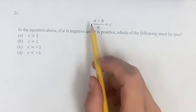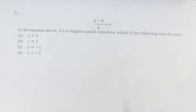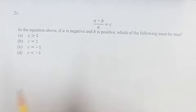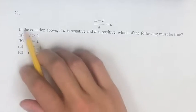we are given that a minus b over a is equal to c. And a is negative, and b is positive, and from this information we have to come to some conclusion about c.